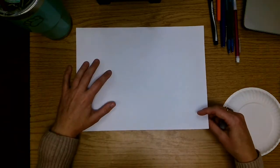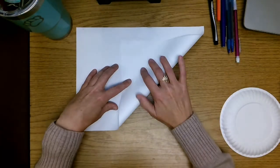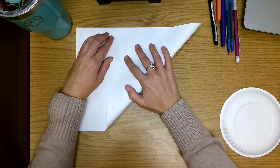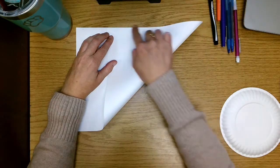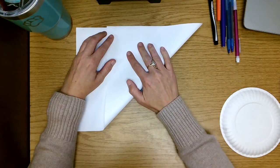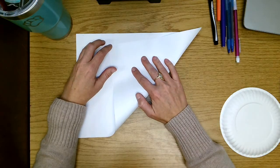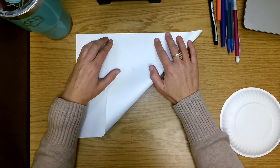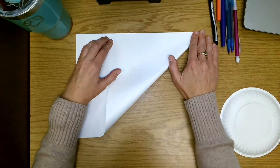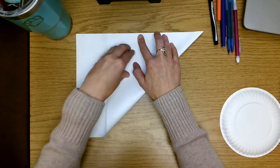To do that, you're going to take a corner of your paper and you're going to fold it up until this line at the top meets. You don't want it to be too high and you don't want it to be too low, or it won't be a perfect square. So we're just going to line up this edge.